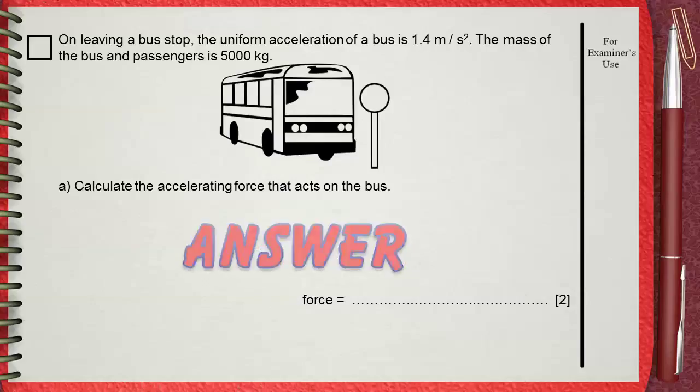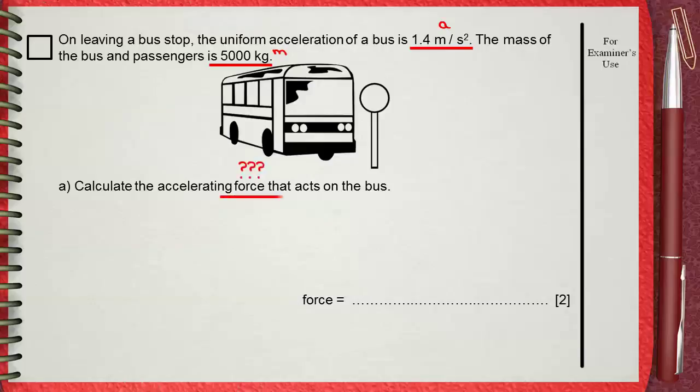A simple and direct question. You have the acceleration 1.4 meters per second squared and you have the mass of 5000 kilograms. Simply he is asking for the force. F equals ma can do this.